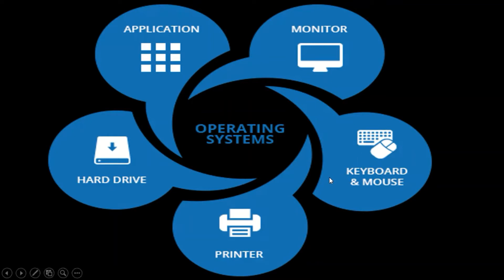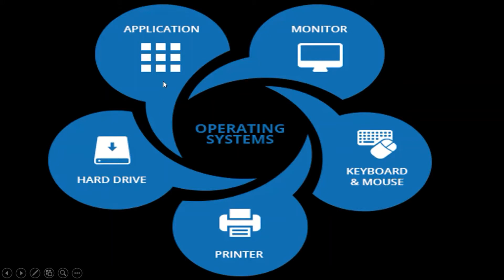Other hardware devices are also controlled by the operating system — we can see monitor, keyboard, mouse, and other input/output devices such as microphone, scanner, and printer. The operating system also communicates with the printer and with the hard drive or storage device. So in this diagram, the operating system is responsible for controlling all input/output devices as well as different applications.